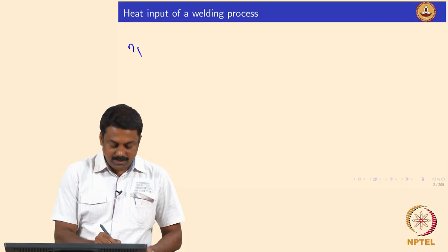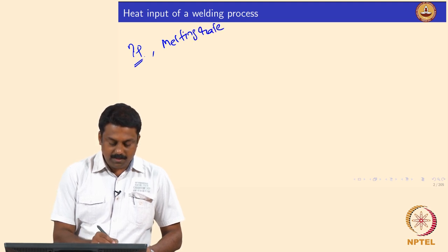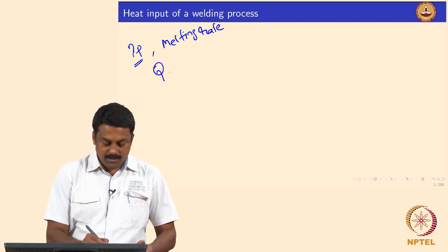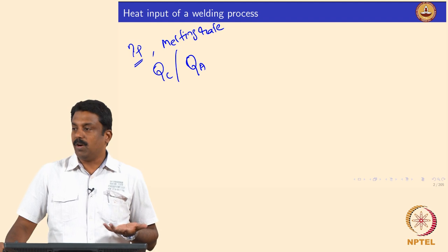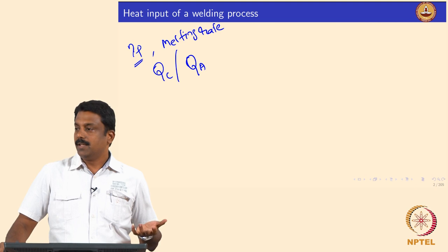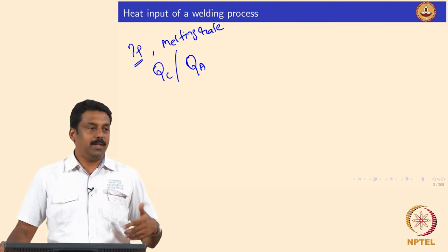In the last class we looked at two things: efficiency calculations, eta P, and then melting rate. We were deriving the heat in anode and cathode — QC and QA. Based on the polarity, we can assume that the workpiece is anode or cathode, so the amount of heat that goes into the workpiece is determined by whether we are using straight polarity or reverse polarity.